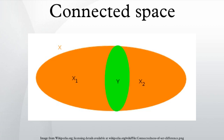Connected components: the maximal connected subsets of a non-empty topological space are called the connected components of the space. The components of any topological space X form a partition of X — they are disjoint, non-empty, and their union is the whole space. Every component is a closed subset of the original space. It follows that, in the case where their number is finite, each component is also an open subset.